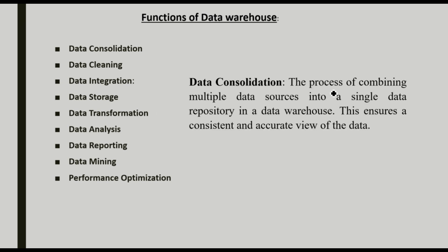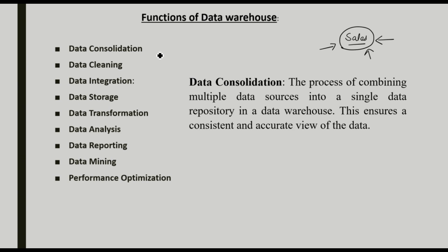Data consolidation is the process of combining multiple data sources into a single data repository in a data warehouse. We consolidate data related to a particular subject — maybe sales, distribution, or online business. This ensures a consistent and accurate view of data. That is the first function of a data warehouse: data consolidation.